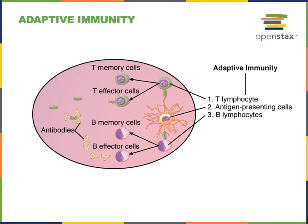In antibody-mediated immunity, B-lymphocytes are the major activated lymphocyte. The receptors of B-lymphocytes are antibodies embedded in the plasma membrane. When that receptor binds an antigen, the B-lymphocyte becomes activated and divides to produce long-lasting memory B-cells as well as effector B-cells called plasma cells or plasmocytes. Plasma cells secrete antibodies into the lymph and blood plasma, where the antibodies can travel and bind to pathogens, neutralizing them and marking them to sensitize other defense mechanisms.